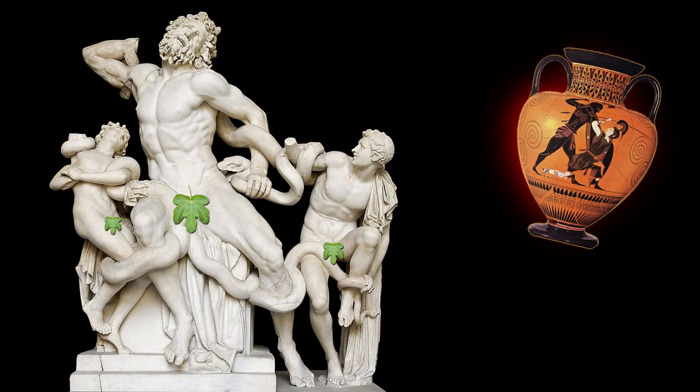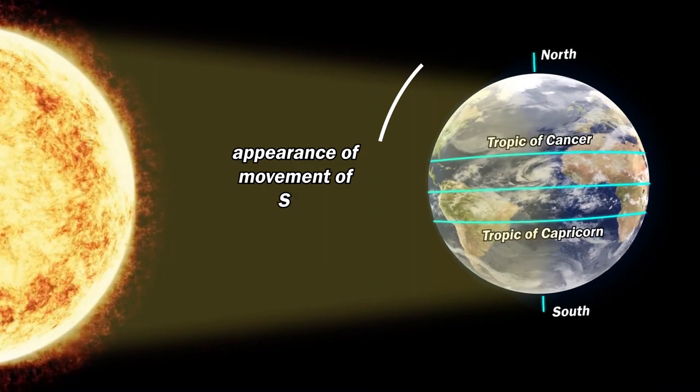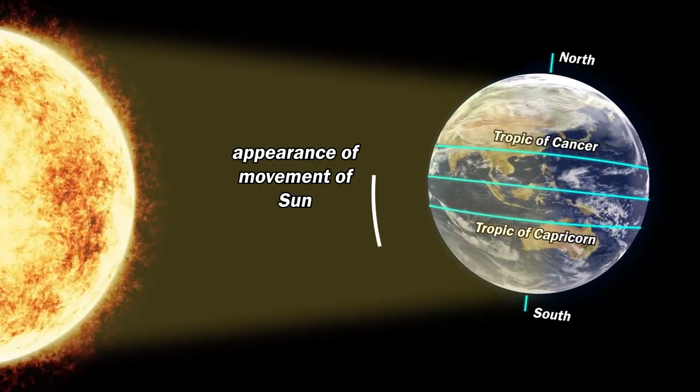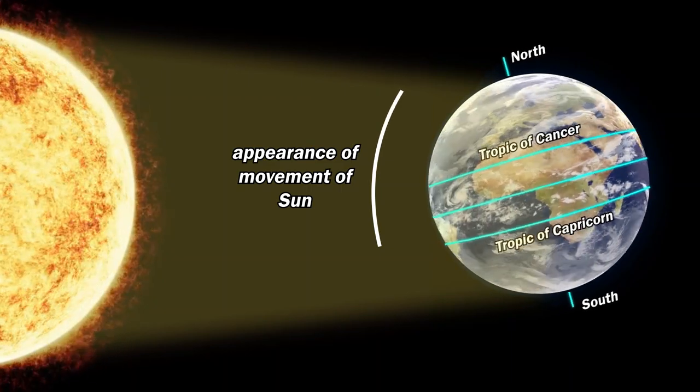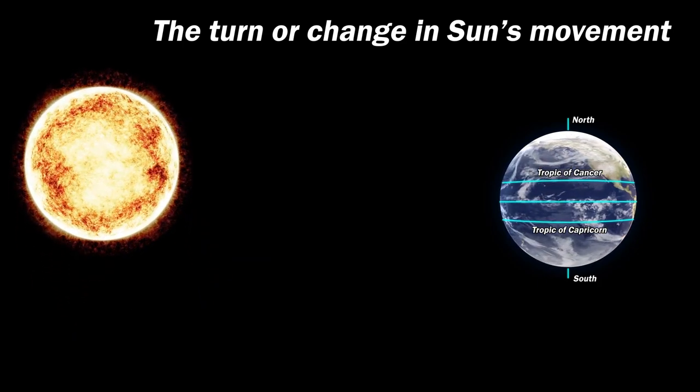The word tropic is a Greek term for the phrase to turn. The sun appears to turn in its course from northward to southward direction as it reaches the Tropic of Cancer and vice versa for the Tropic of Capricorn. Thus, the term tropic signifies the turn or change in sun's movement.